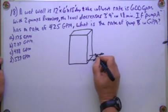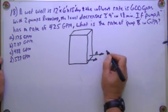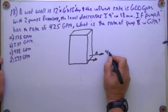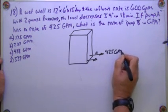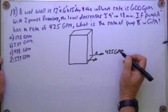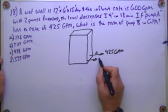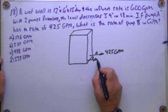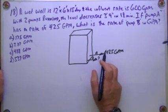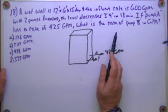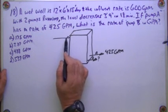Pump A has a rate of 425 GPM. Pump B we don't know. And the influent is 600 GPM.